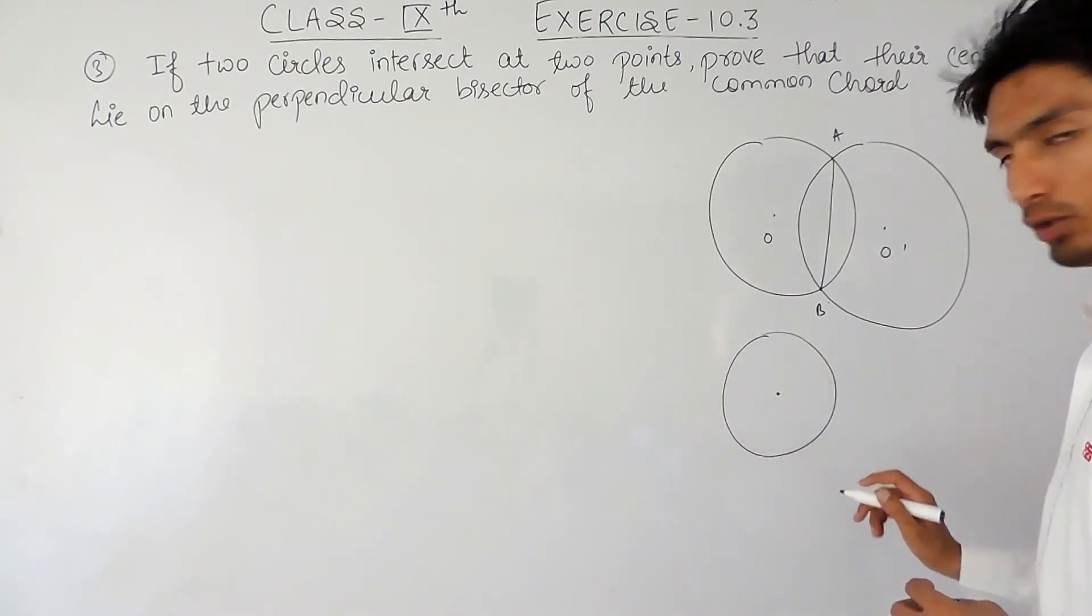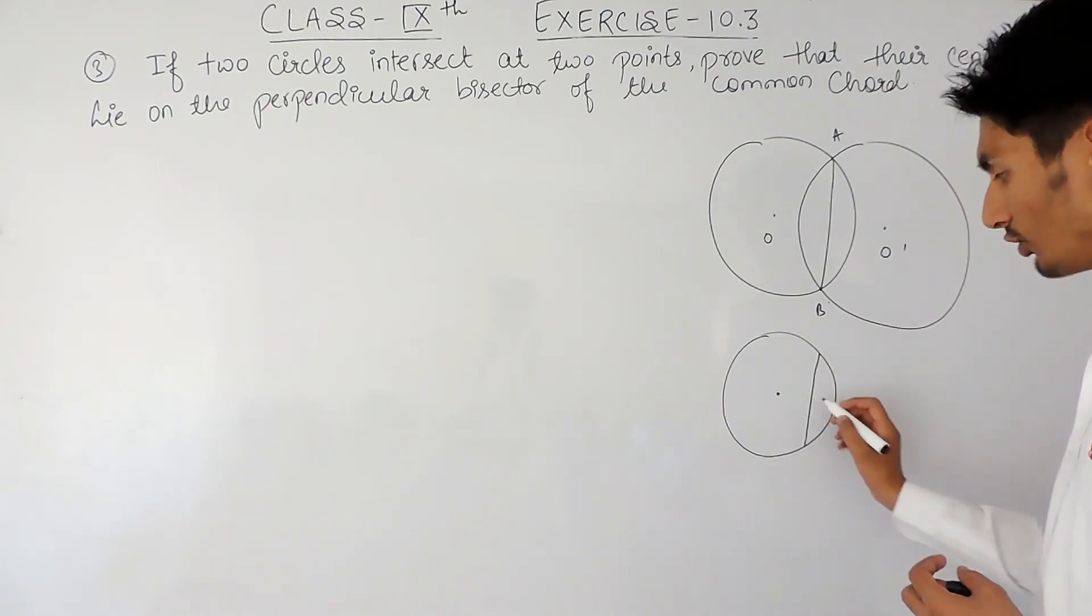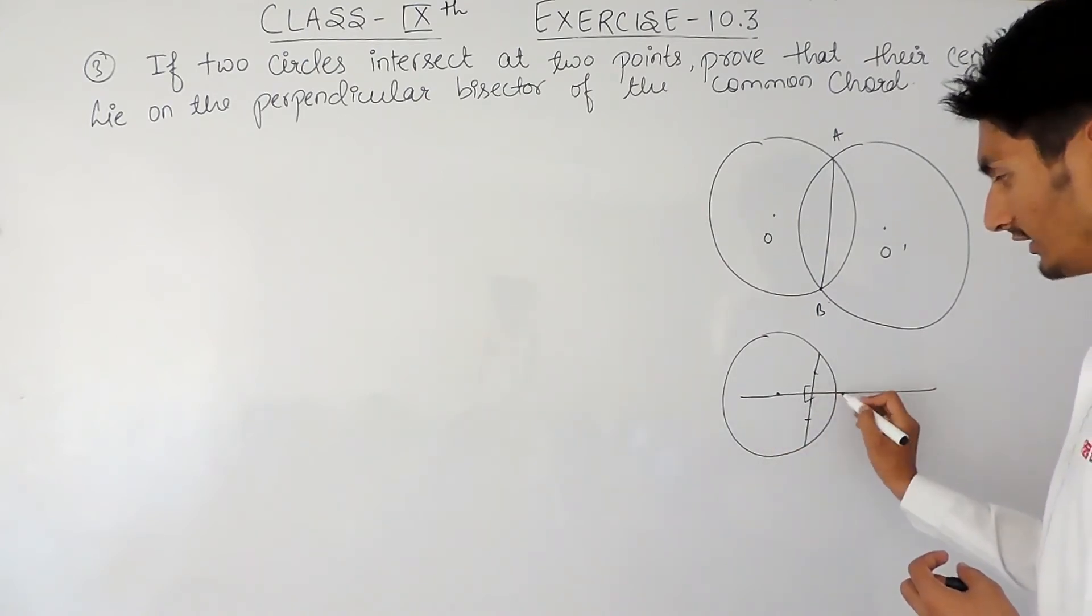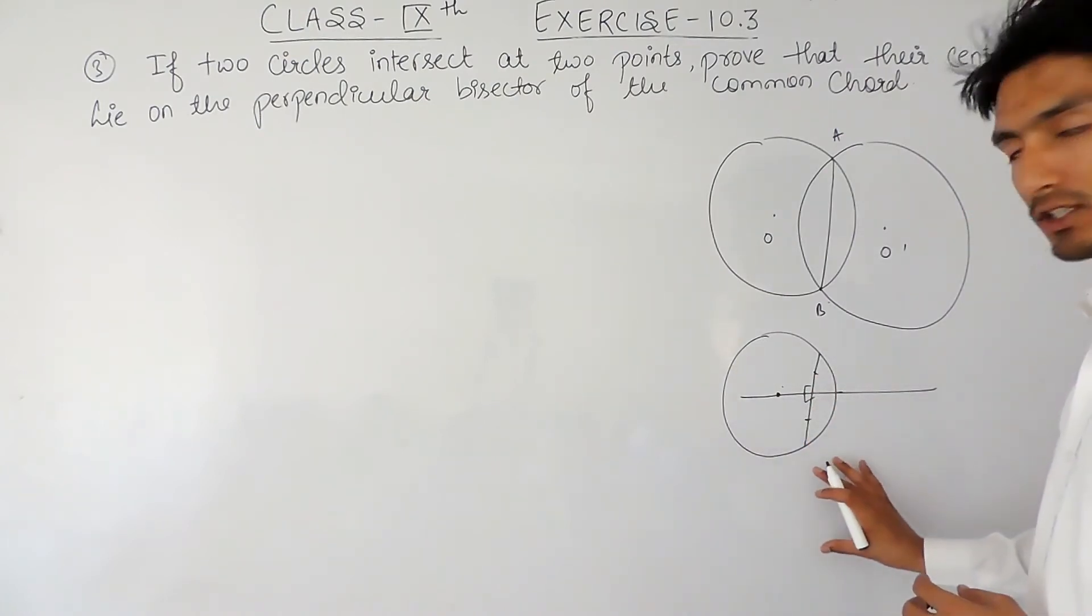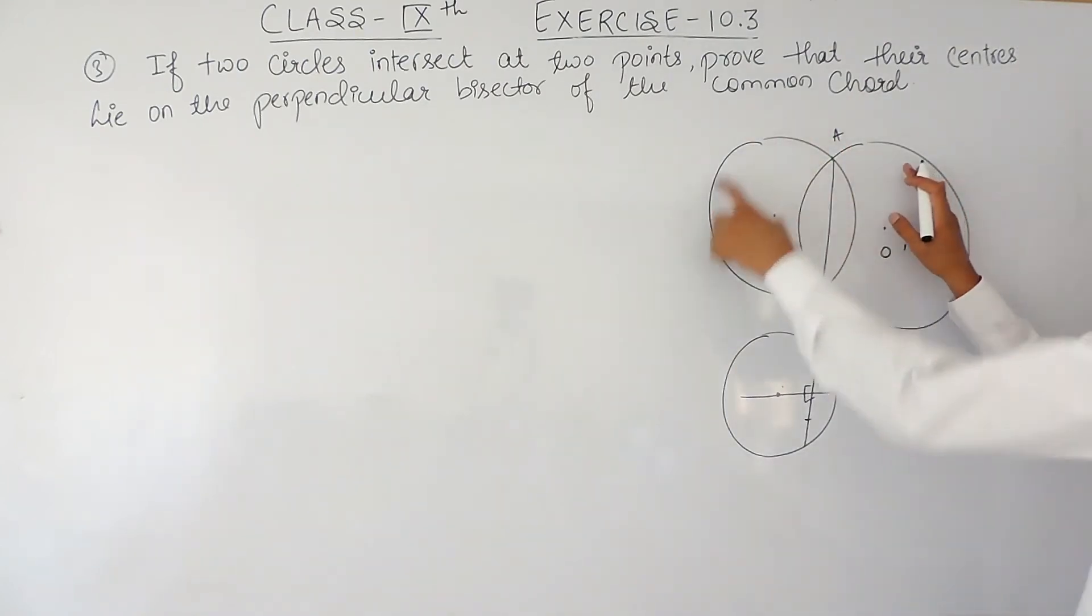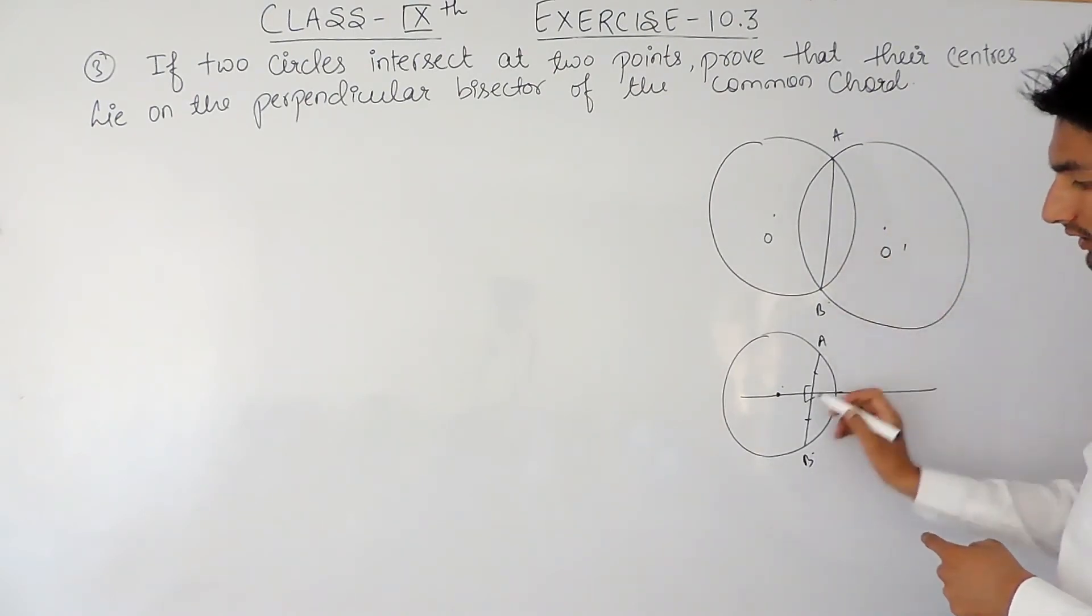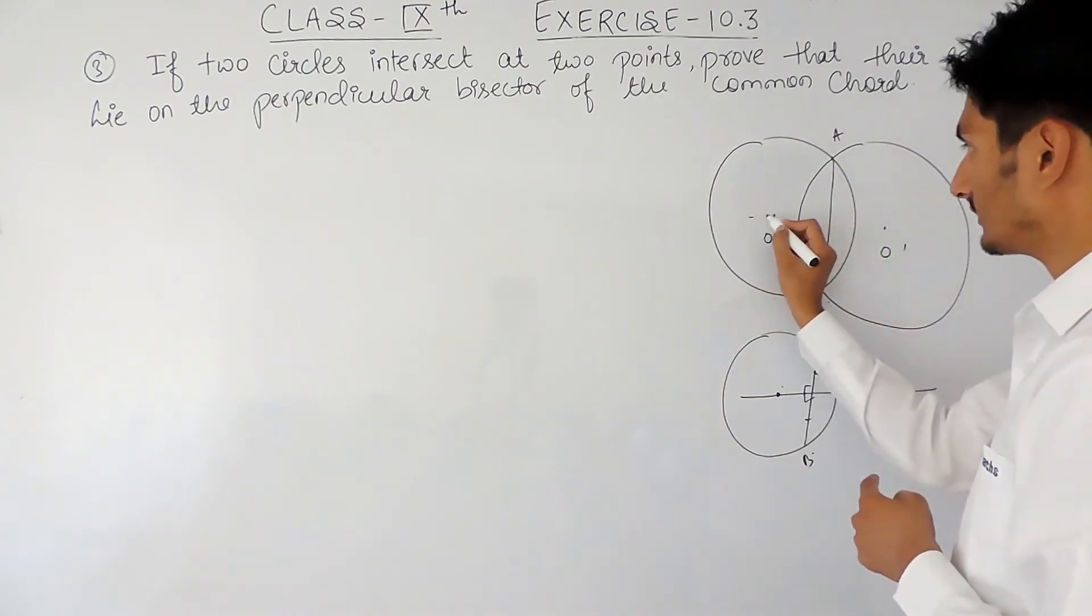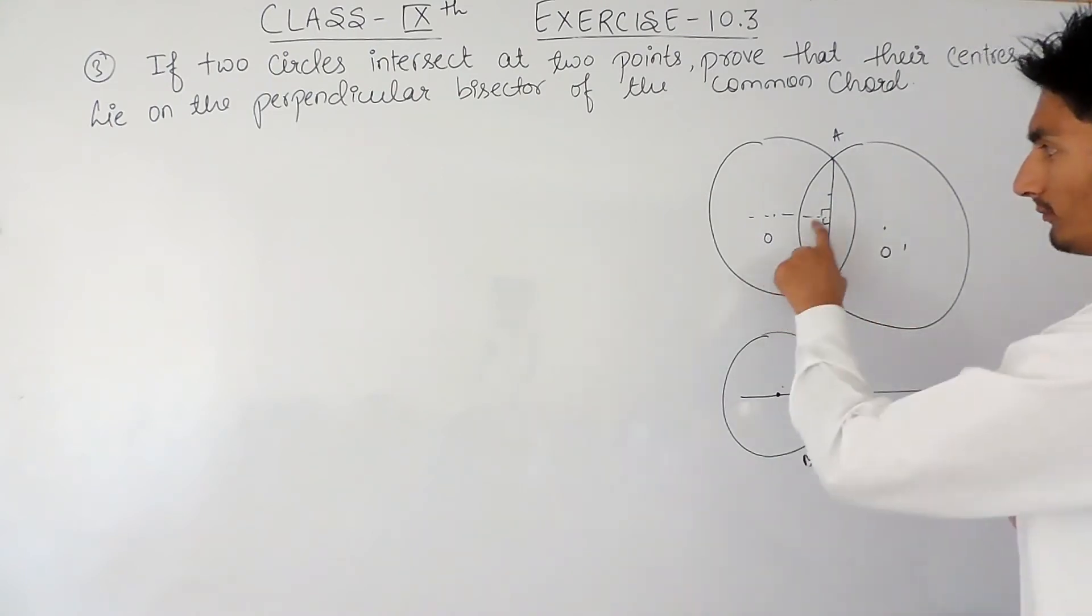In a theorem we know that if there is a chord and if I draw the perpendicular bisector of this chord, it should pass through the center. So using this theorem I can say that for this circle, AB is the chord, and if I draw the perpendicular bisector for this chord, it should pass through the center.